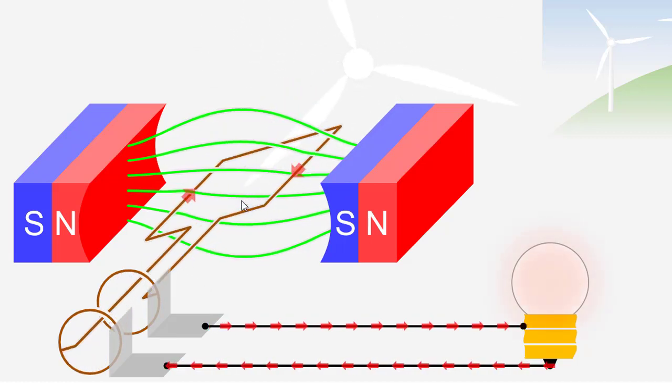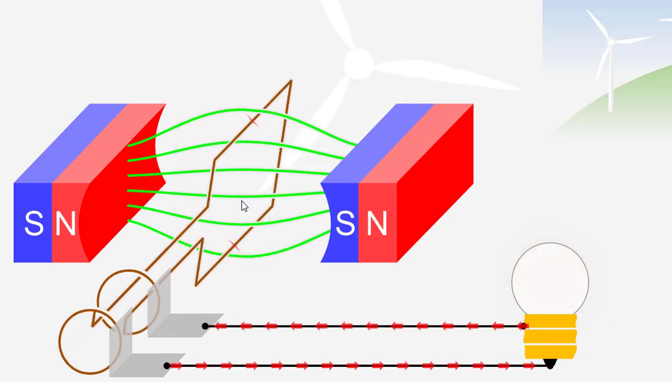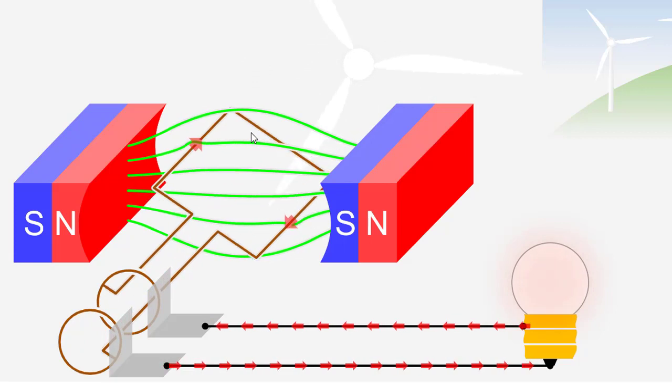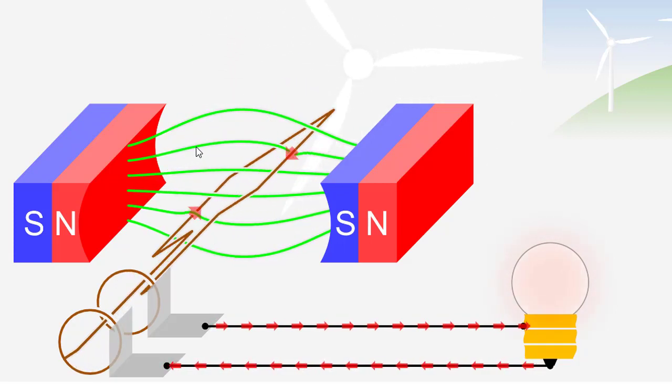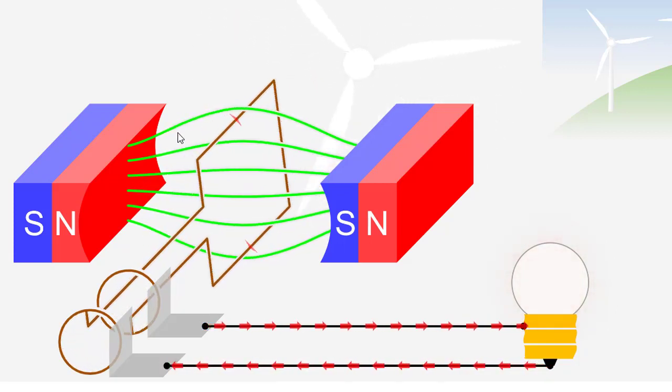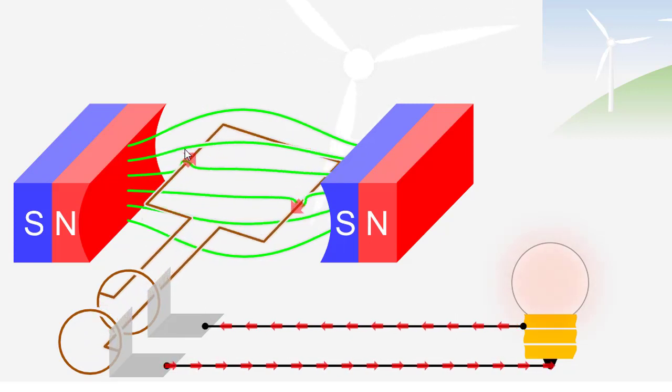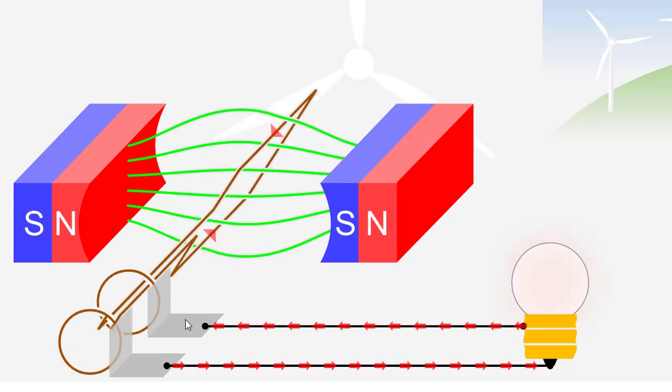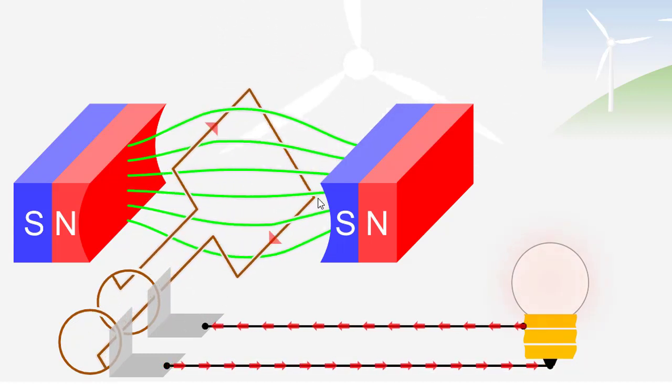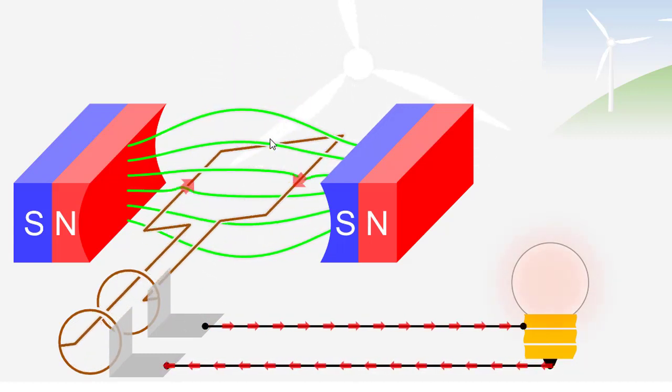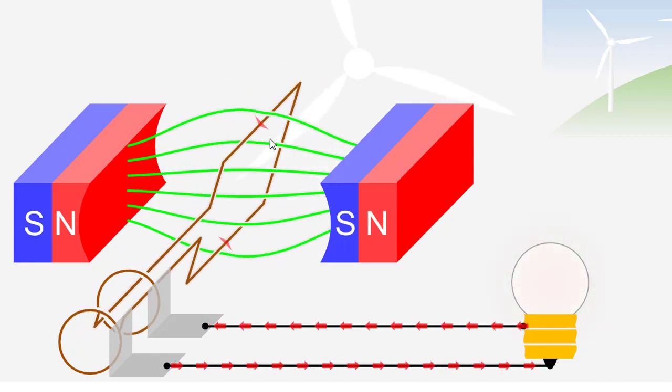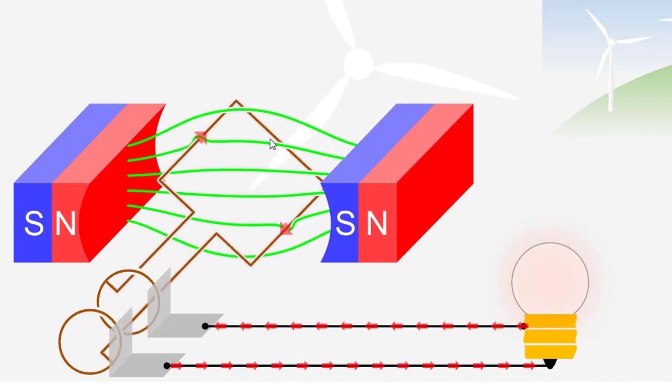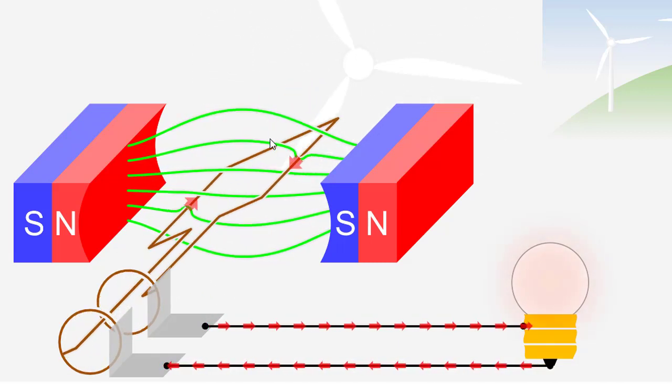According to Faraday's law of electromagnetic induction, due to the rotation of this coil, it is cutting this magnetic flux, and due to that, the EMF is induced in this coil. Since it is rotating, the alternating voltage is generated, or we can say a sine wave is produced.